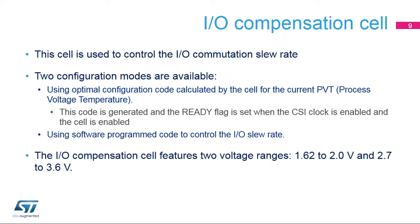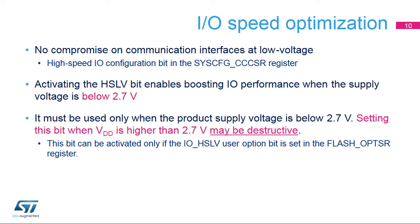The I.O. compensation cell features two voltage ranges: 1.62 to 2.0 volts and 2.7 to 3.6 volts. Optimizing the I.O. speed when the product voltage is low is allowed by setting the high-speed I.O. configuration bit in the SysConfig CCSR register. This bit is active only if the I.O. HSLV user option bit is set in the flash OPTSR register. It must be used only when the product supply voltage is below 2.7 volts. Setting this bit when VDD is higher than 2.7 volts may be destructive.